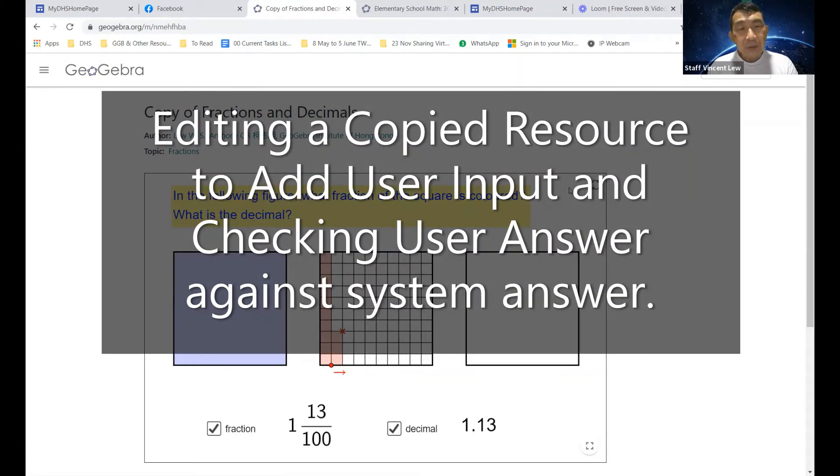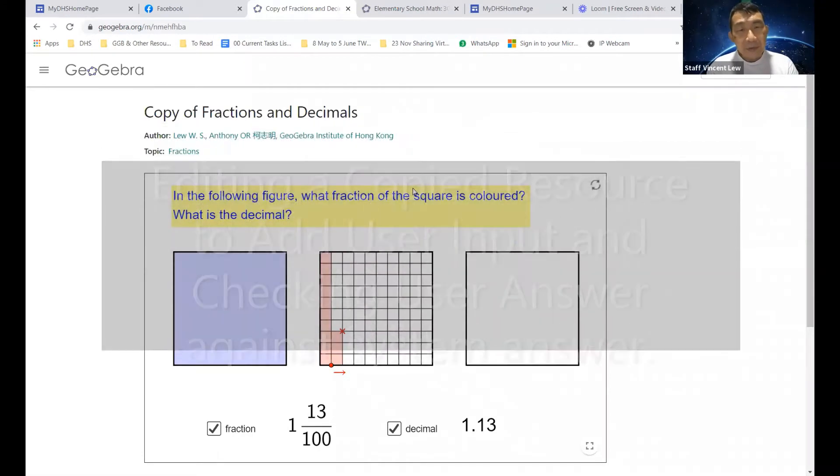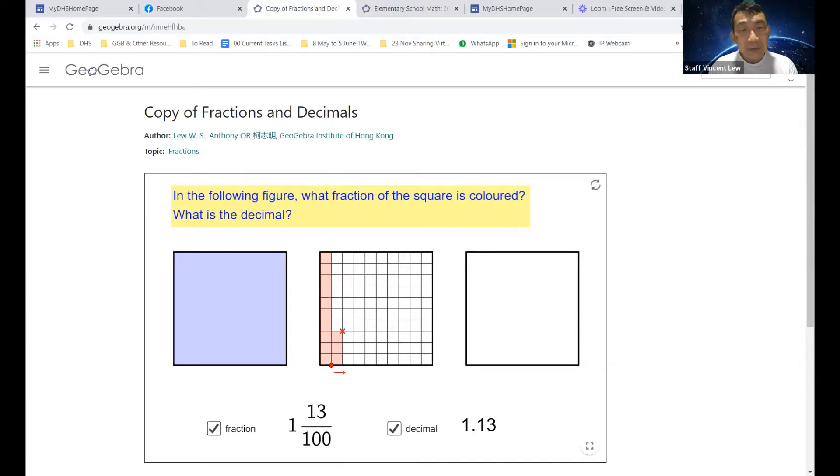I'm recording this video to show you how to do an editing of the resource that you have copied. A copy of fractions and decimals. We are going to add an input box where a user can key in the decimal and then compare it against the system's answers. So let's first click on edit activity.